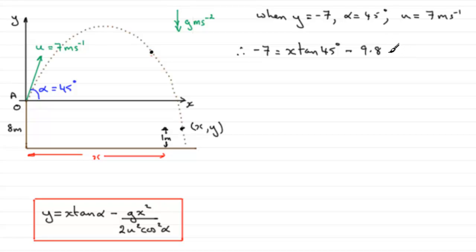And then we've got minus G. Let's put in the value of G as 9.8 and then multiply by X squared, and it's all divided by 2 times U squared times cos squared alpha. So that's going to be 2 times U squared, so that's 7 squared cos squared alpha, cos squared of 45 degrees. So we've got that now. So we just tidy this up.